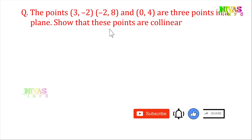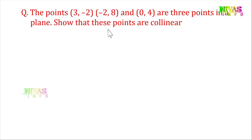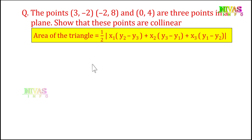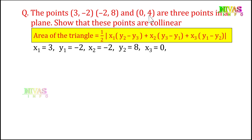So the formula is: area of triangle = 1/2 into [x1(y2 - y3) + x2(y3 - y1) + x3(y1 - y2)]. We substitute the values: x1 is equal to 3, y1 is equal to minus 2, x2 is equal to minus 2, y2 is equal to 8, x3 is equal to 0, and y3 is equal to 4.